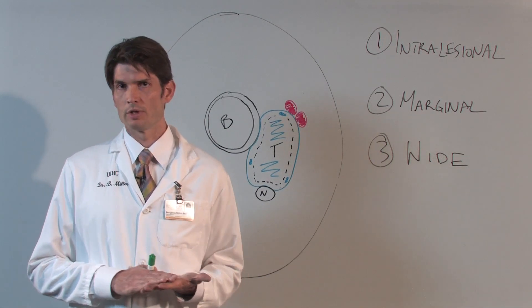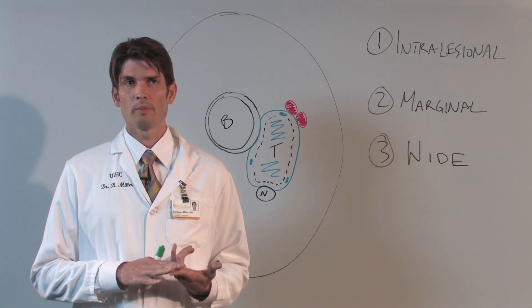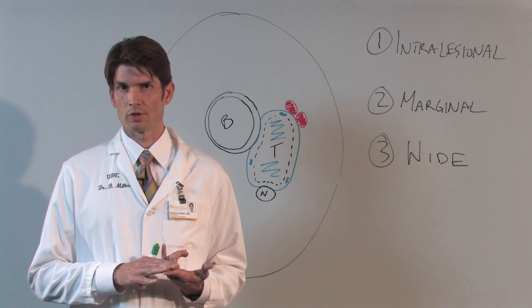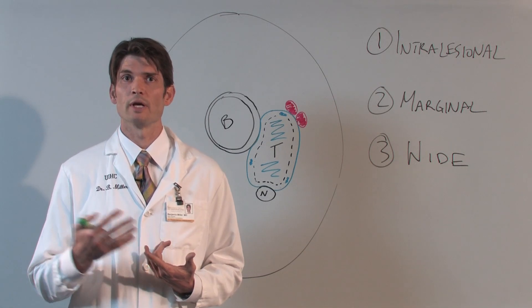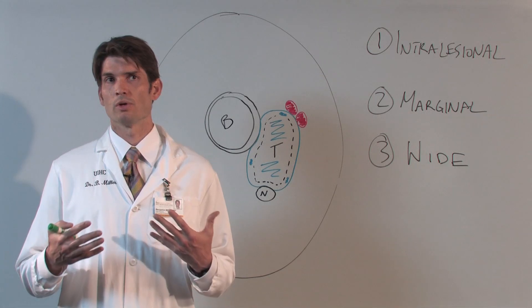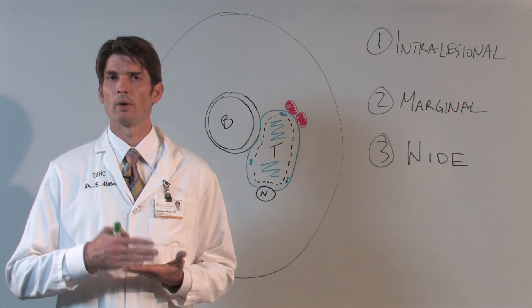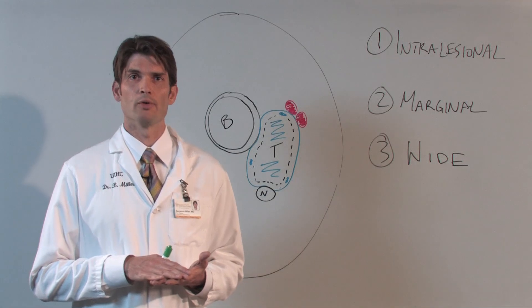Soft tissue sarcoma is a very rare cancer, but it's something that we see a lot of here at the University of Iowa. The treatment of this is primarily surgical, and when we think about how to treat an individual patient surgically, I think it's helpful to think about individual considerations by way of surgical margins. What are we trying to do in the operating room with each patient?